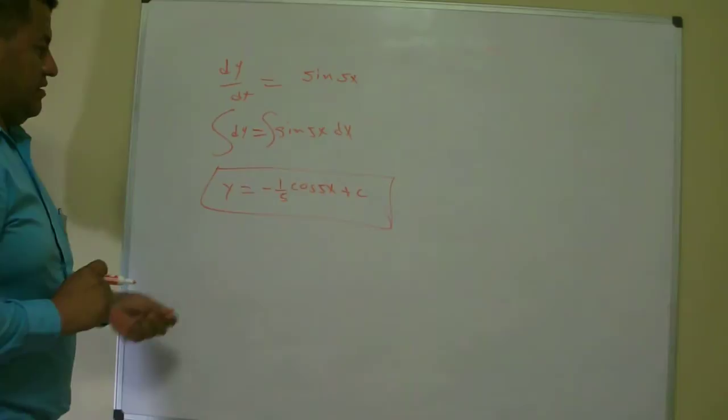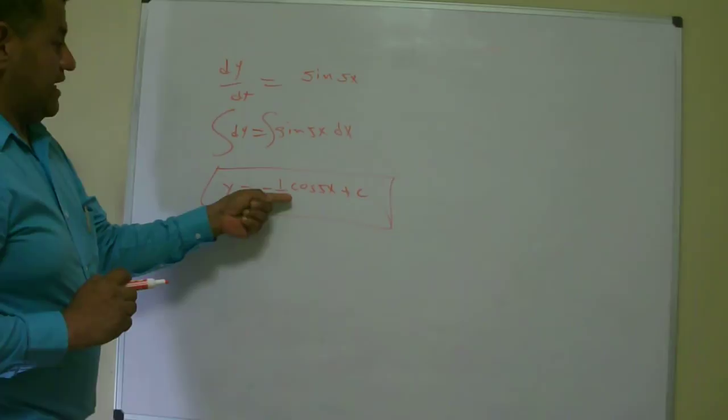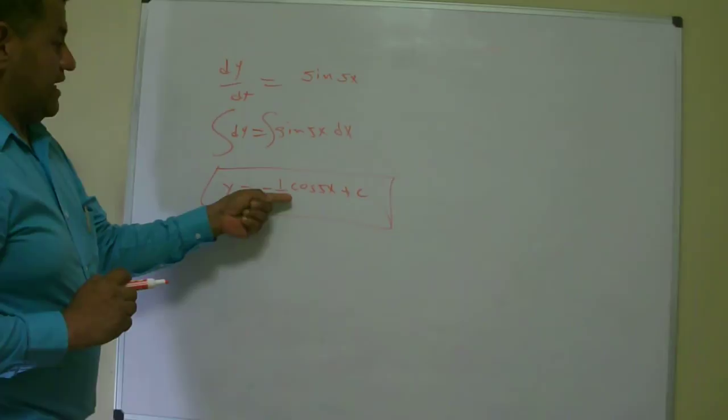The integral of sine is negative cosine, and then you pull that, you actually divide it by that 5, and that's what you get.